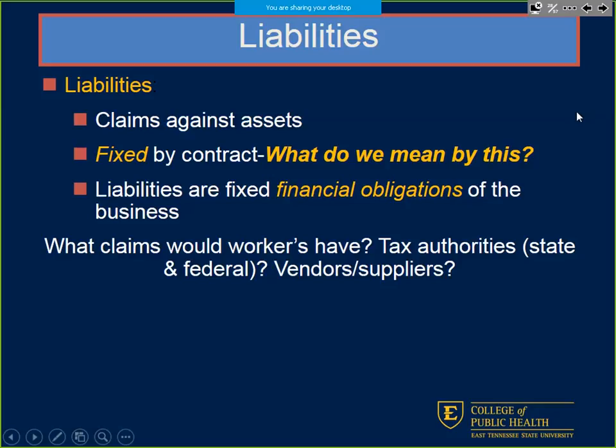Liabilities are claims we have on assets — how we're going out and financing all the assets reported on the top half of the balance sheet. These are things fixed by contract — negotiated terms, a contract in place for different liabilities — fixed financial obligations for the business, hardwired in.